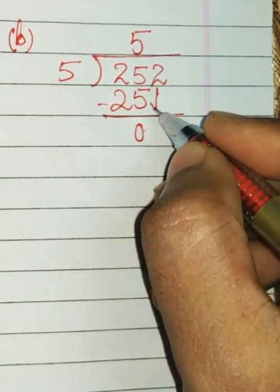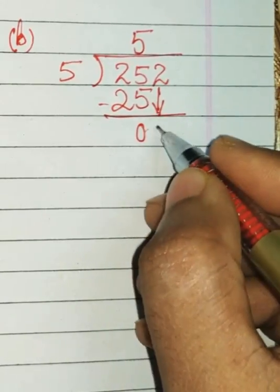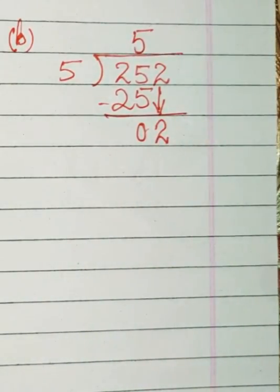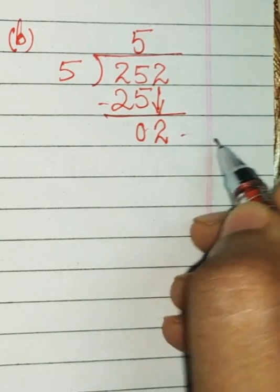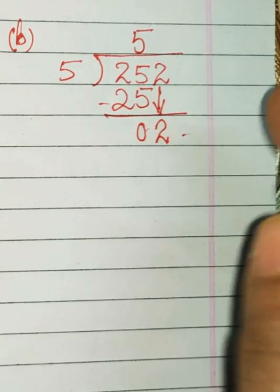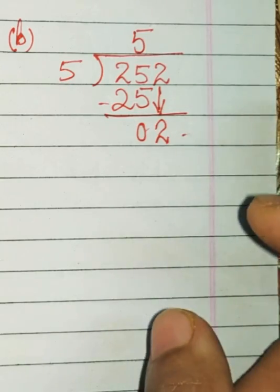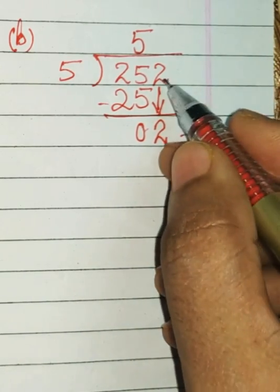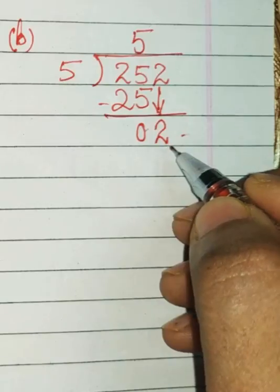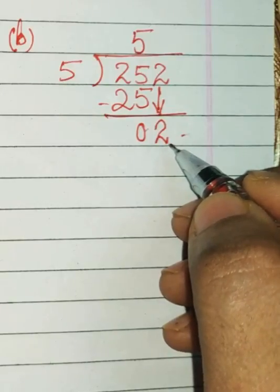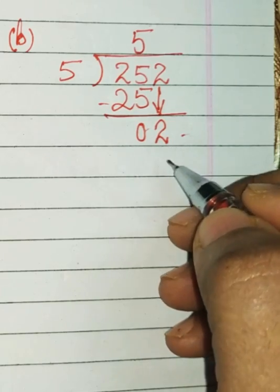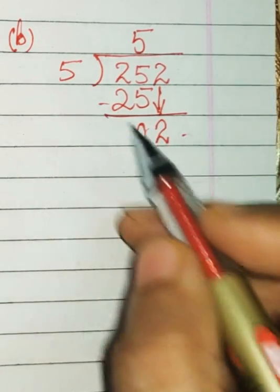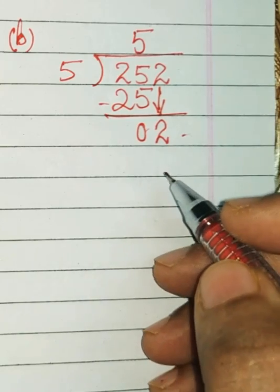Now the next digit is 2 which comes down. Let me write it down: 2. Now many of the children they do write 2 is the remainder, but this is completely wrong. This is the question you brought down; how can the question be remainder?